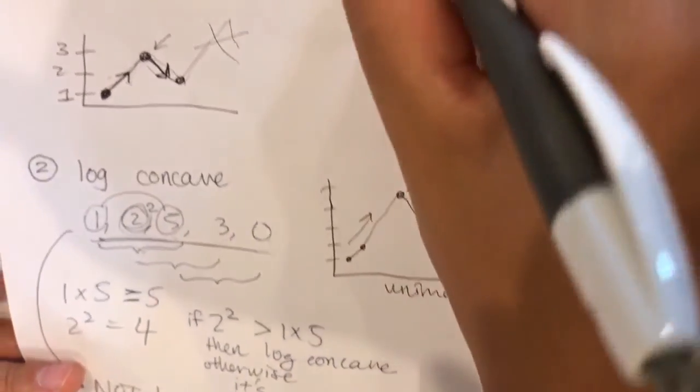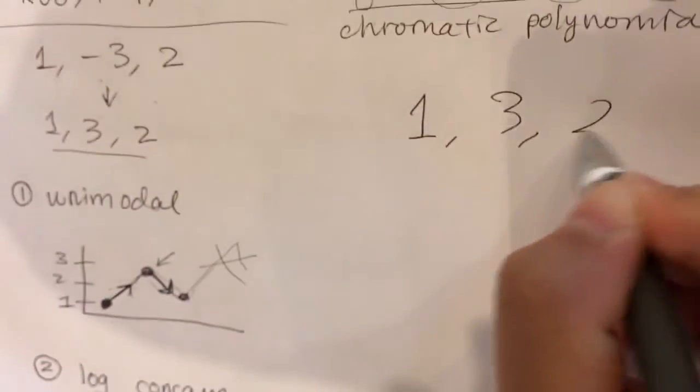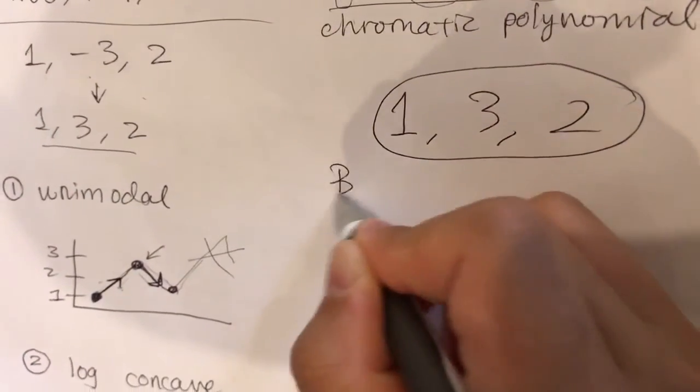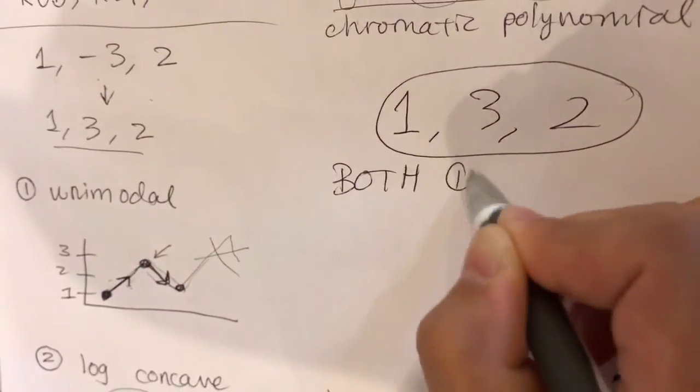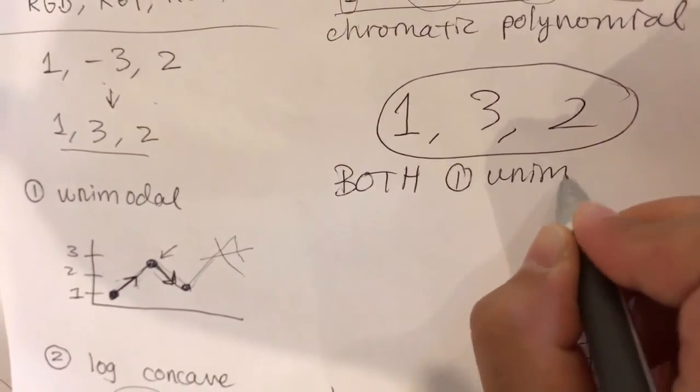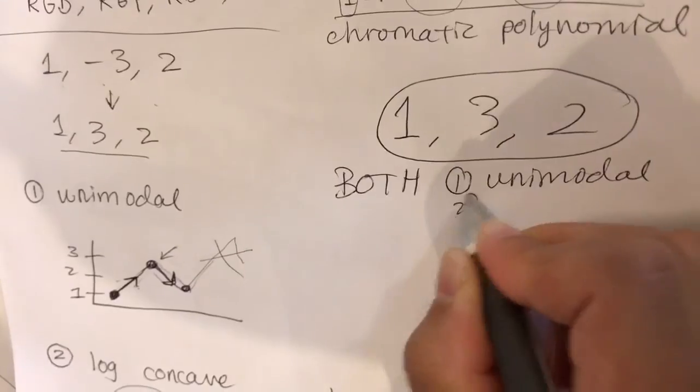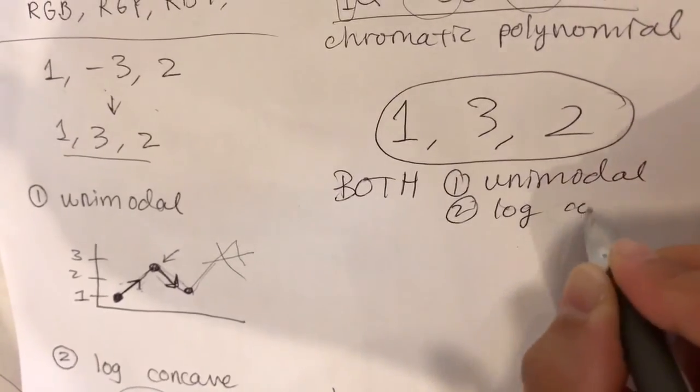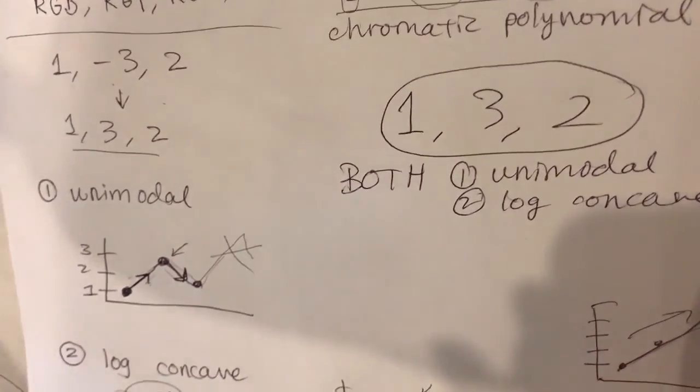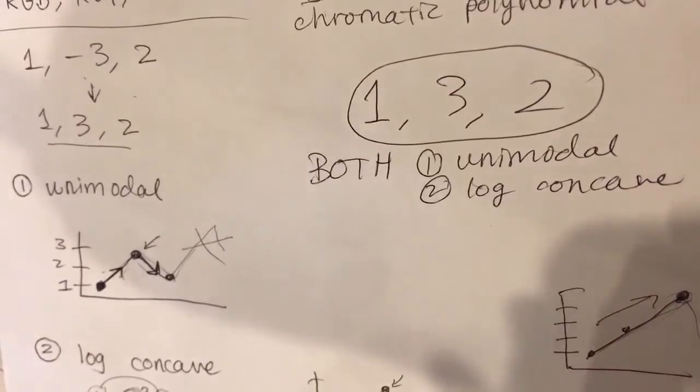Now what's special about 1, 3, 2 is that it is both. First, it is both unimodal, and secondly, it is log concave. It has both of these properties. Now this leads to a conjecture.